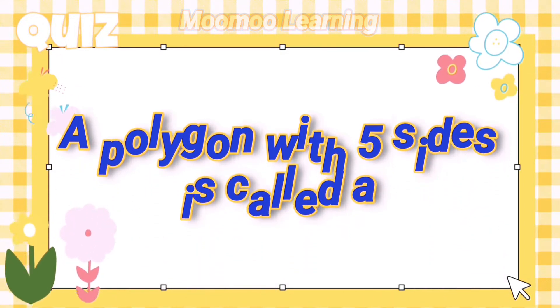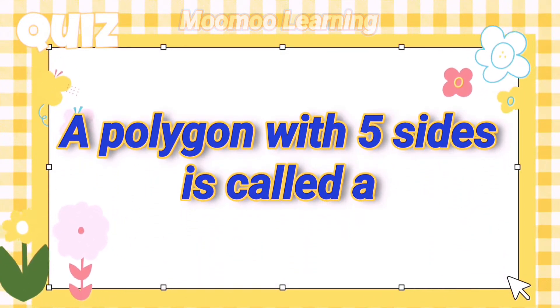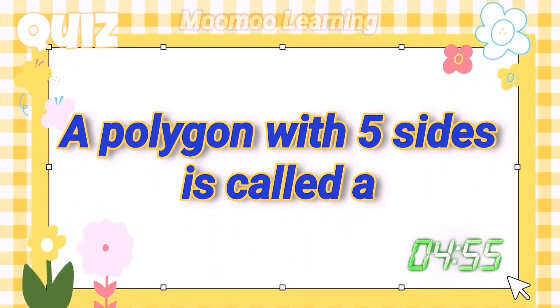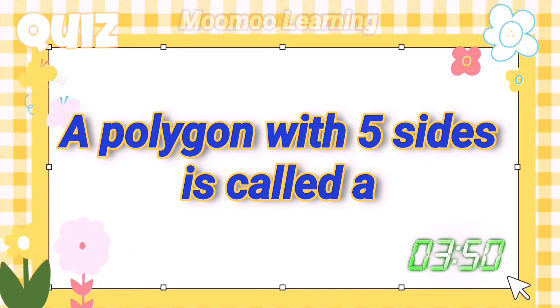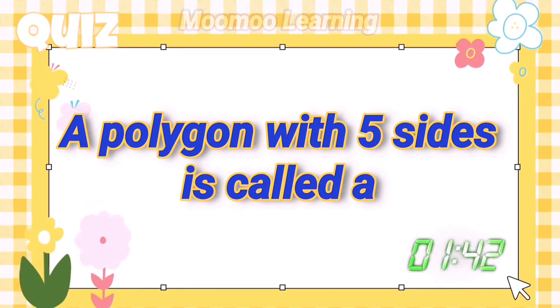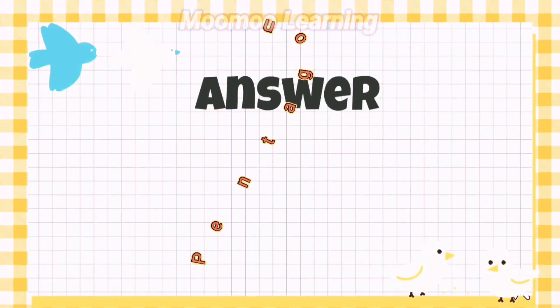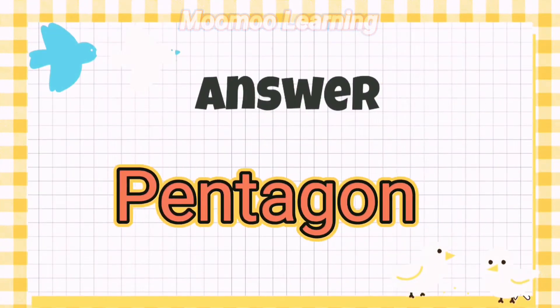A polygon with five sides is called a Pentagon.